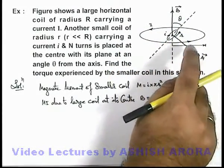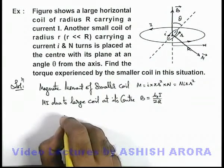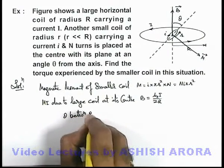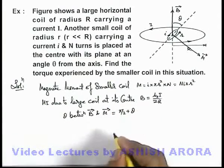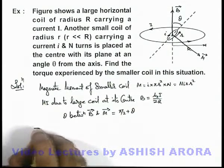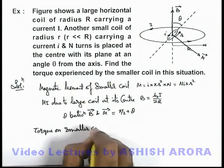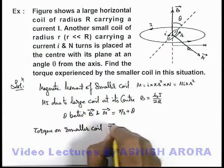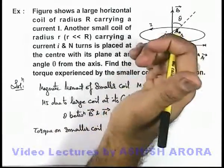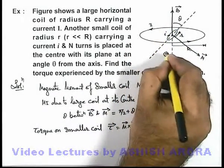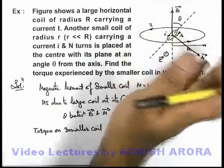In this situation, the angle between the magnetic induction vector B and the magnetic moment vector M is π/2 + θ. We can directly write the torque on the smaller coil as τ = M × B. The direction of M × B, calculated again by the right-hand thumb rule, will be in the outward direction, so the torque vector acts outward, meaning the smaller coil experiences an anti-clockwise torque.